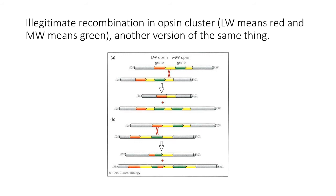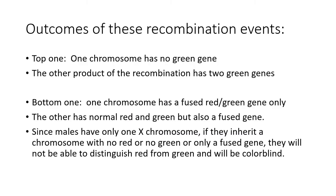Another representation shows the long wavelength red and the green genes. You can have recombination in the intergenic regions between them or within the two genes to cause formation of these hybrid forms. The outcome is sometimes no green gene, but more likely red-green fusion genes which are neither red nor green and therefore cannot help distinguish those colors. If you're male, you have only one X chromosome, so if you inherit a chromosome with no green or a fusion gene, you'll have difficulty distinguishing red from green. Females have much less of an issue because they have two X chromosomes and two opportunities to get one of each functioning properly.